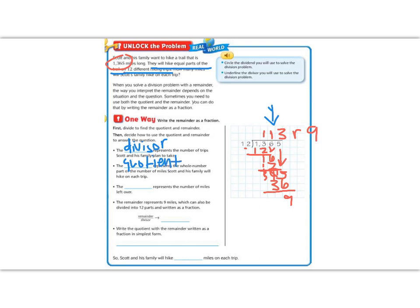The blank represents the number of miles left over. Okay, this is a keyword left over. That means we want the remainder. So that's the remainder.